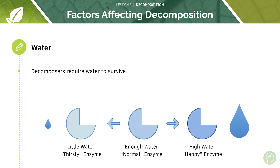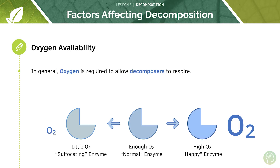Regarding water: if decomposers are starved of water, the rate of decay decreases. Whereas if there is a lot of water, there will be a high rate of decay as some decomposers use enzymes that are secreted onto dissolved organic matter and work through absorption. So we need enough water for optimum decomposing.